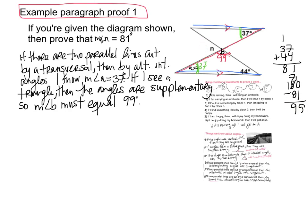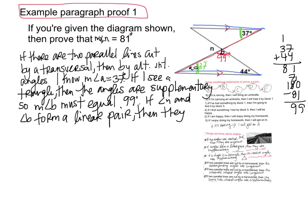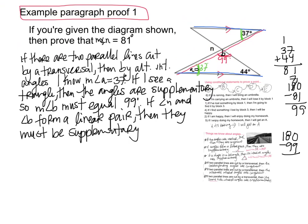The next thing I notice is that this is a line, and angle N and angle B form a linear pair. If angle N and angle B form a linear pair, then they must be supplementary. If they're supplementary, that means they add up to 180. So I've got 180, take away 99, and I know that's going to be 81 degrees. So the measure of angle N is 81 degrees.